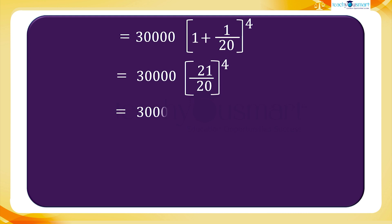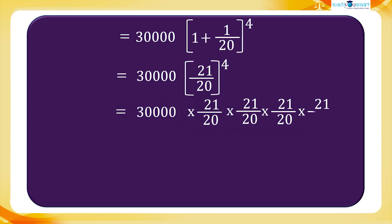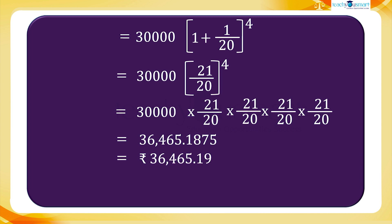Equals 30,000 multiplied by (21/20) raised to 4, equals 30,000 multiplied by 21/20 × 21/20 × 21/20 × 21/20, equals 36,465.1875. That is, A equals 36,465.19 rupees.